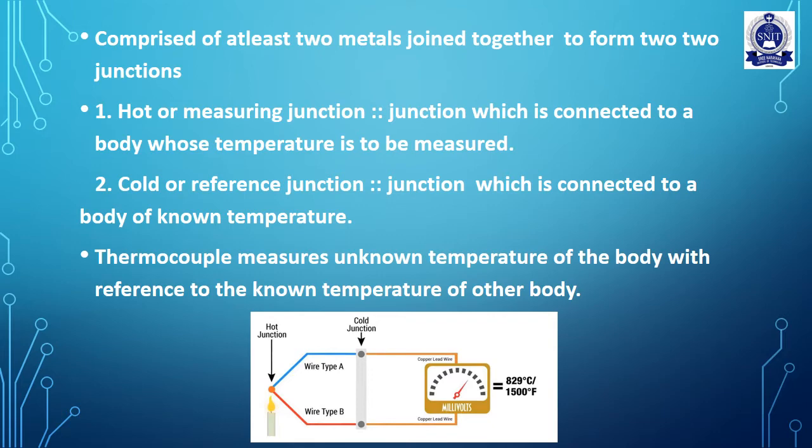The thermocouple contains two junctions: a hot junction and a cold junction. We measure the temperature at the hot junction. At the cold junction, we connect a voltmeter to read the output.